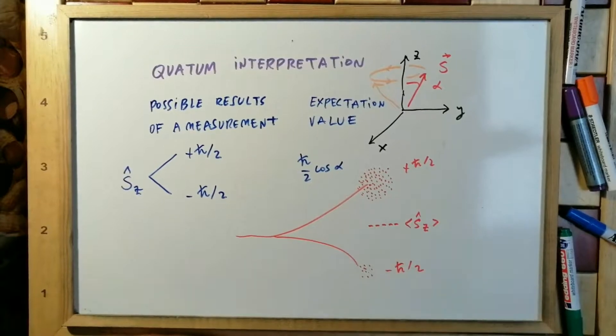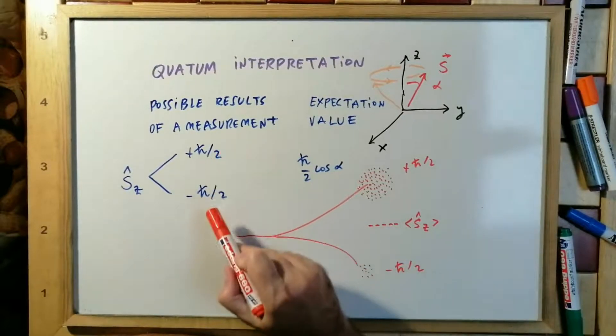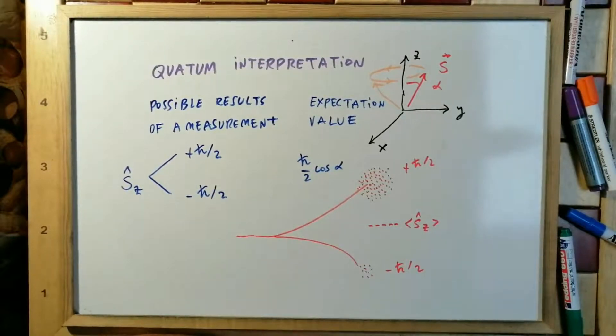This is a statistical result. The expectation value can have a value between plus h-bar over 2 and minus h-bar over 2. This is due to its statistical result.